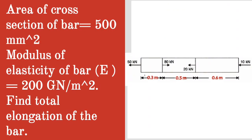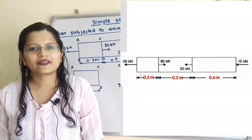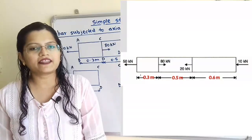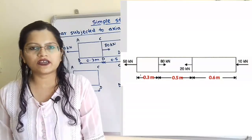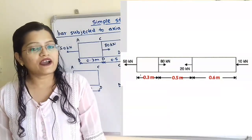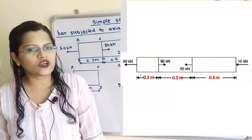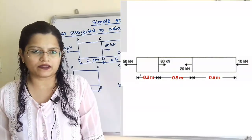Area of cross section of bar is equal to 500 millimeter square. Modulus of elasticity of bar is equal to 200 gigaNewton per meter square. Find the total elongation of the bar. In this question, bar is subjected to axial forces, and we have to find out total elongation delta L of the bar.